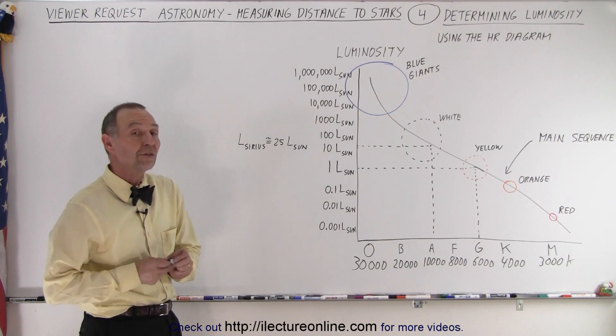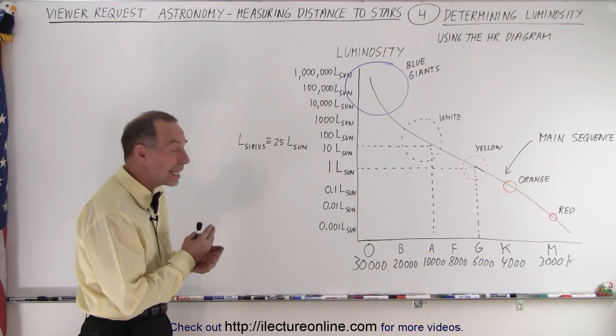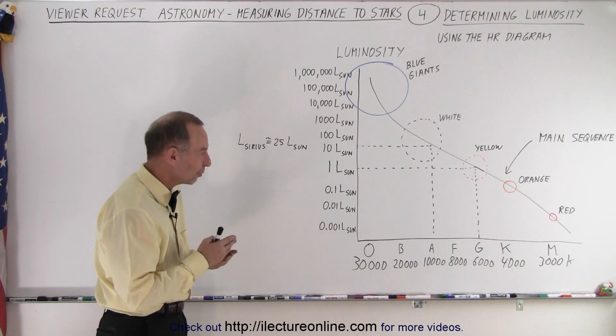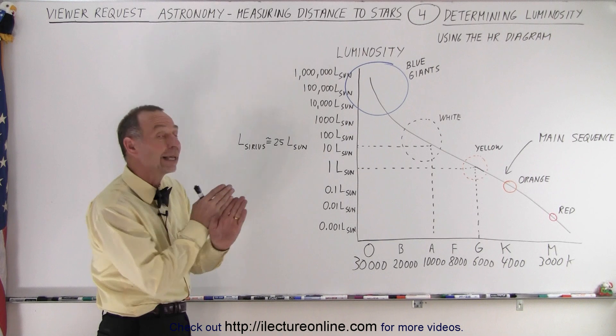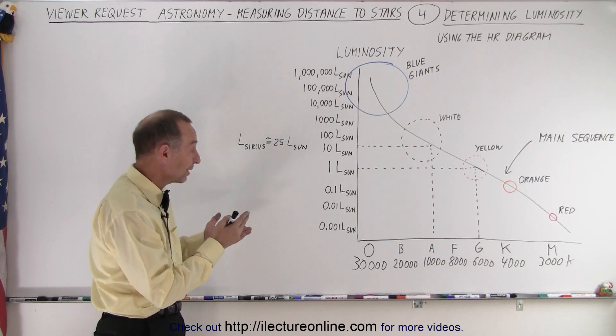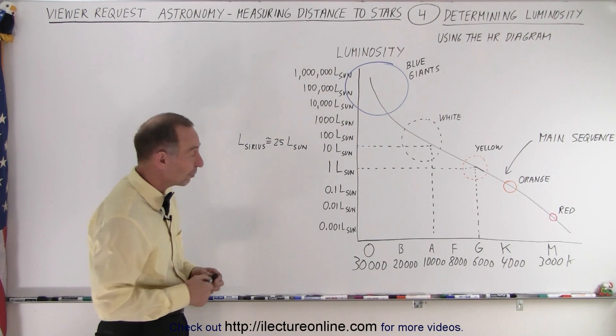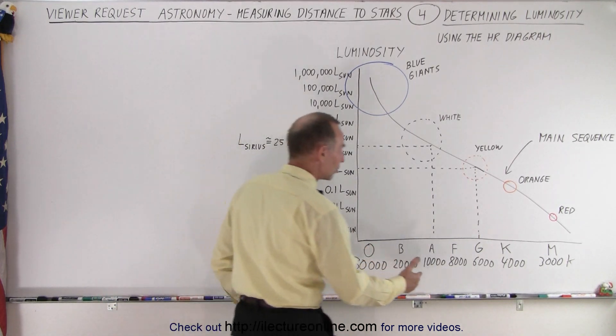So what we do is we use the color filters to determine the difference between the blue filter and the visible filter. We then line that up to calculate the type of star we're dealing with. The surface temperature. We then calculate the surface temperature. And then we go to the HR diagram.